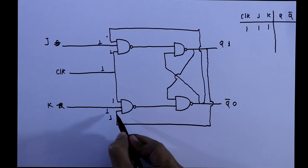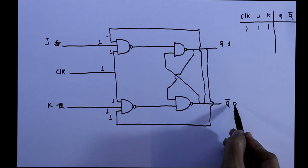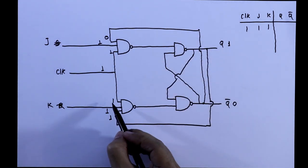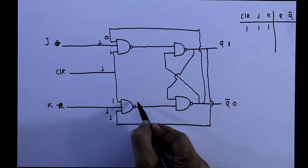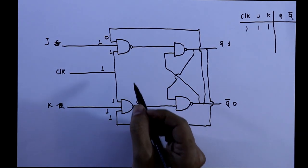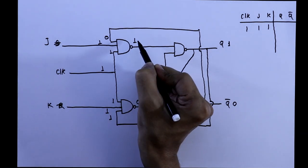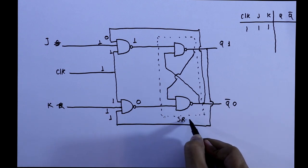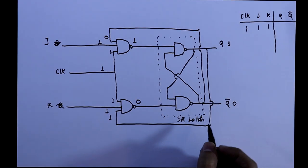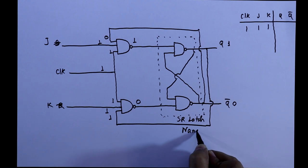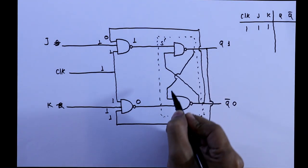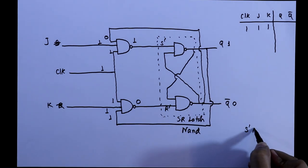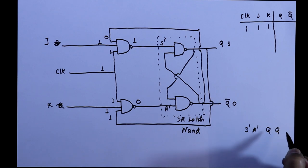So 3 inputs of this NAND gate is 1 and as it is 0, so this 0 is connected to this NAND gate. 3 inputs is 1, so output of this NAND gate will be 0 and here its output will be 1. Now as you can see, this part of the circuit is SR latch. And it is SR latch by NAND gate. So I can write S dash and R dash. It is S, R, Q, Q bar.